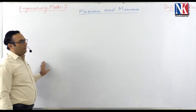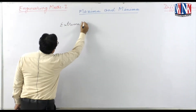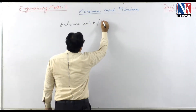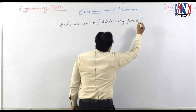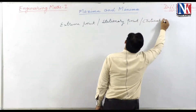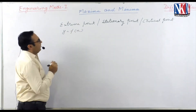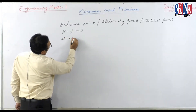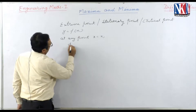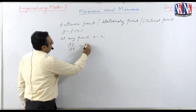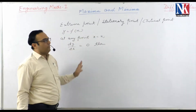In Class 12, you have studied Maxima and Minima for functions of one variable. There were some basic things we learned, such as extreme point, stationary point, or critical point. Suppose y is a function of x, and at any point x = x₁, if dy/dx = 0, then such a point is known as an extreme point, stationary point, or critical point.